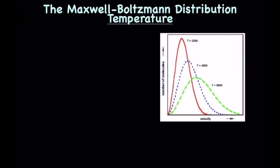Let's start our discussion of the Maxwell-Boltzmann distribution in respect to temperature. Here is a graph, and it's a Maxwell-Boltzmann distribution. What you'll see along the x-axis is velocity, which you can think of as speed. On the y-axis, we have the actual number of molecules.